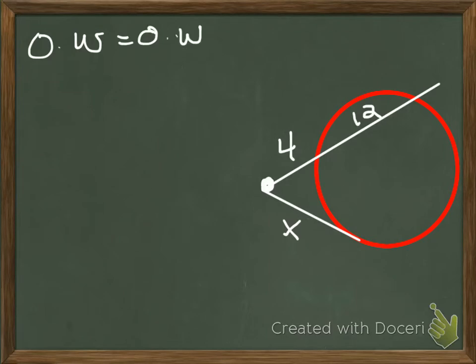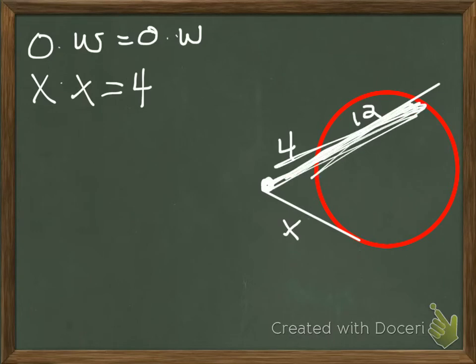So for the tangent, I know the outer length is x and I know that the whole length is x as well because there's nothing to add to it. For the secant, I know that the outer length is 4 and I know that the whole length is from the vertex all the way to where it crosses through the circle on the other side. So I have to add those together. That gives me 16.